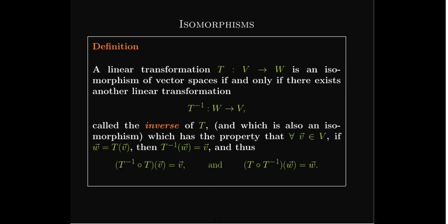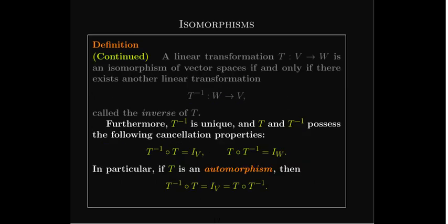T-inverse is unique. The other way to say they undo each other is that when you compose them, you get the identity operator. T-inverse composed with T is the identity operator on V, and T composed with T-inverse is the identity operator on W. For an automorphism, V equals W, so you get a slight simplification.